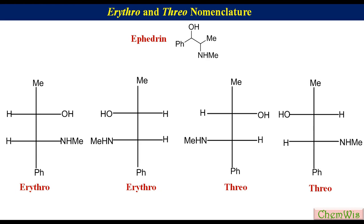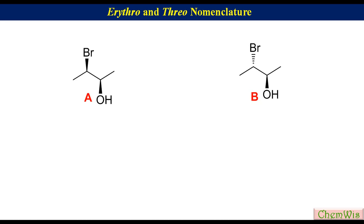Now let's look at two examples, A and B, to determine whether they are erythro or threo. Until now, erythro and threo isomers were represented by Fischer projections, which show molecules in eclipsed conformation. The given molecules are in staggered conformation, so the definition is reversed: in staggered erythro, the same lateral atoms or groups on the two chiral centers are on opposite sides, while in threo they are on the same side.